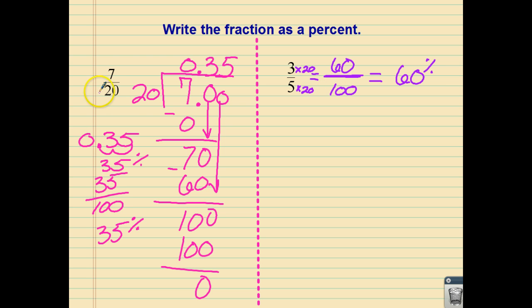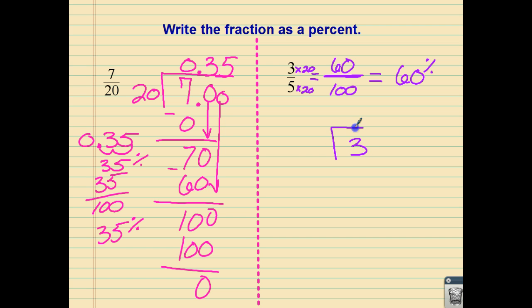We could have done that over here with the 20 as well, because 20 goes into 100 evenly, but I wanted to show you both ways. If you're not comfortable with this idea and you're confused as to whether or not this denominator will go into 100, you can do what we did on the first problem — say, 3 divided by 5, go ahead and do your long division, and then move your decimal at the end for your answer.